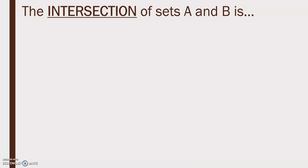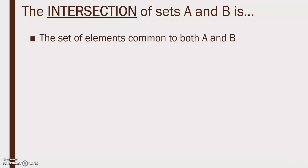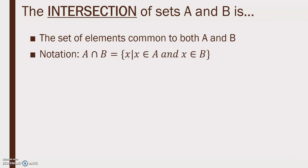The intersection of sets A and B is the set of elements common to both A and B. The notation is A intersect B. The intersection symbol looks like an upside-down U, and it equals the set of x values such that x is an element of A and x is an element of B. X needs to be in both A and B to be in the intersection.